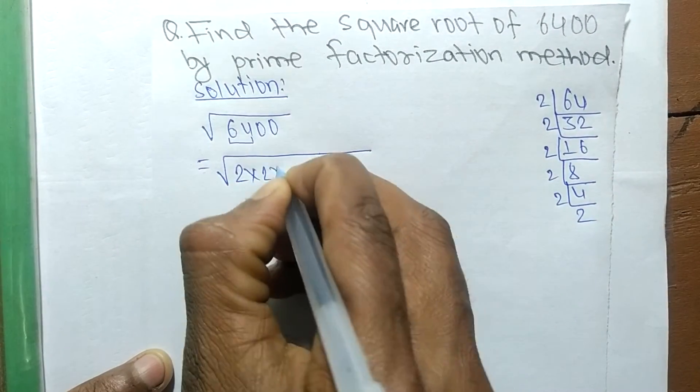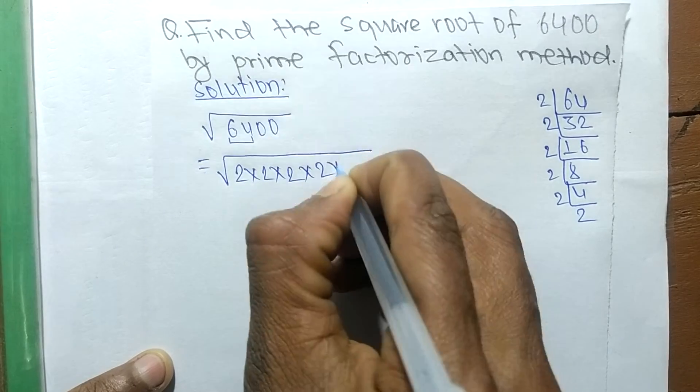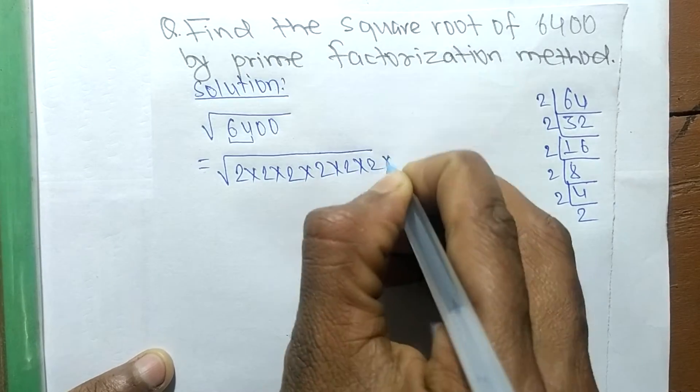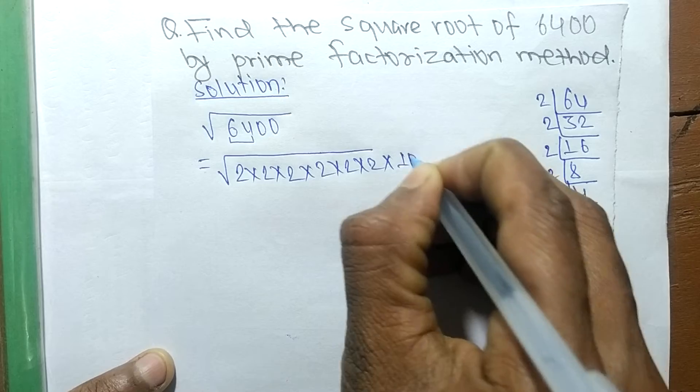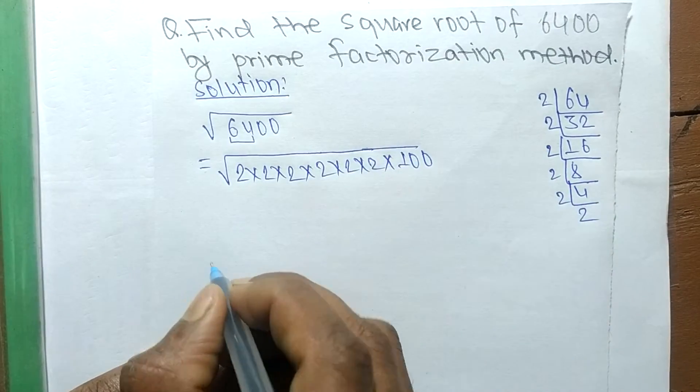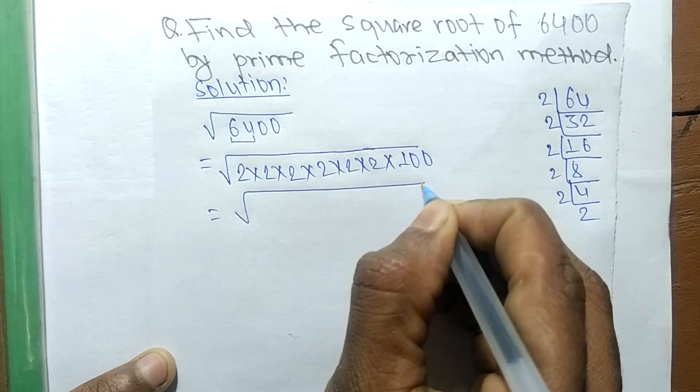So 2 to the power of 6 times 2. The remaining is 100, so now we make the square of all these numbers.